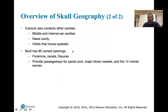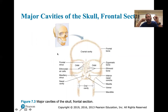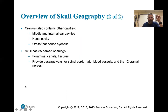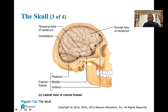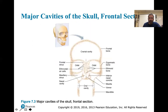The skull has 85 named openings - foramina, canals, and fissures. Foramina are usually round; fissures are more oval. They provide passage for the spinal cord, major blood vessels, and the 12 cranial nerves, which are named from superior to inferior. The cranial cavity, orbital sockets, and oral cavity are all visible from various angles - we'll be learning all these structures and their names.